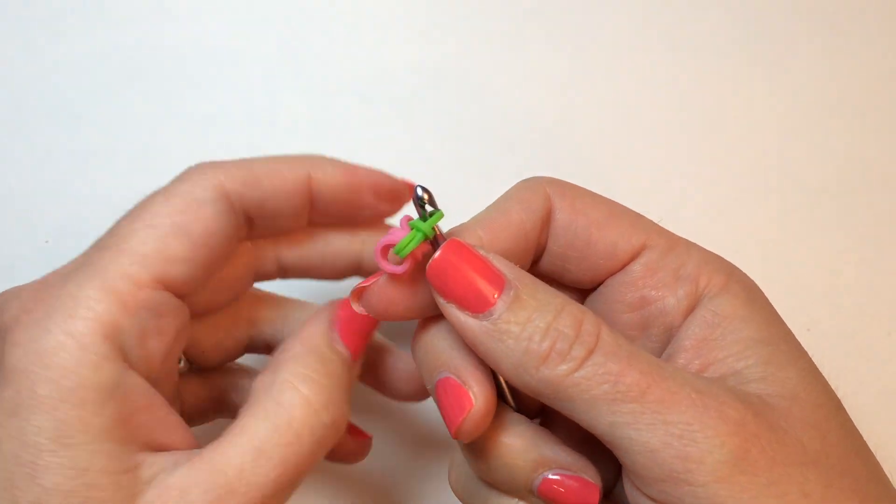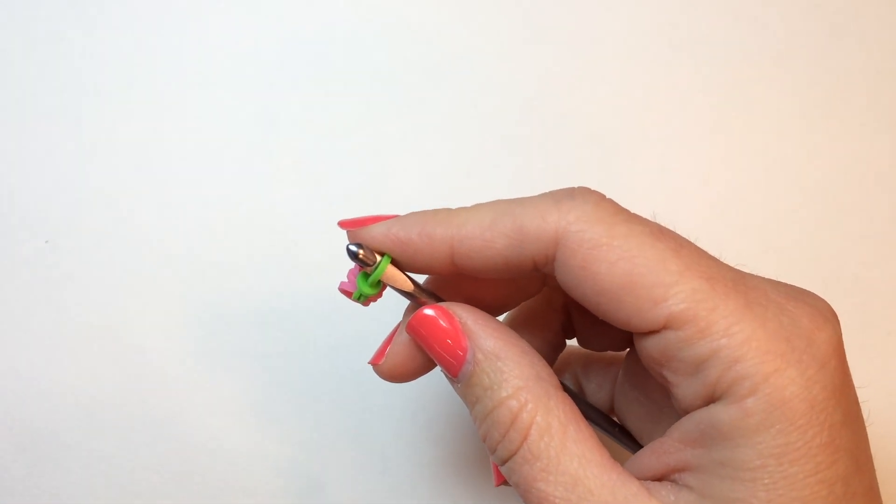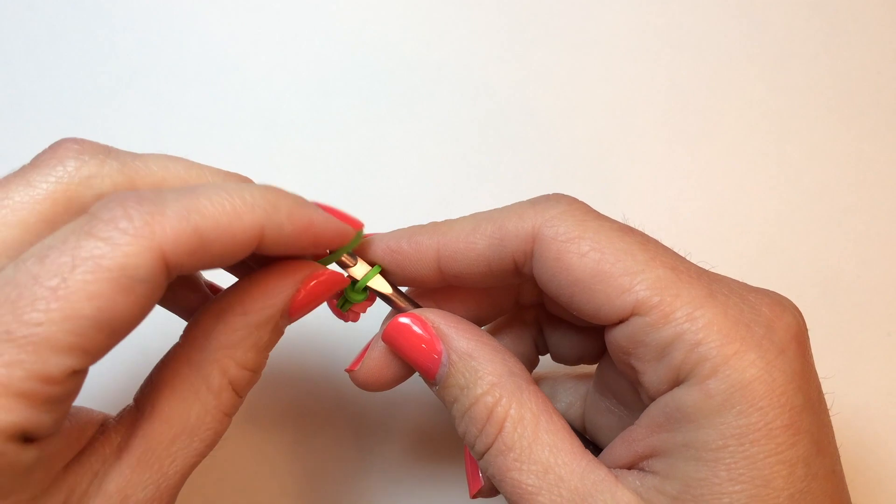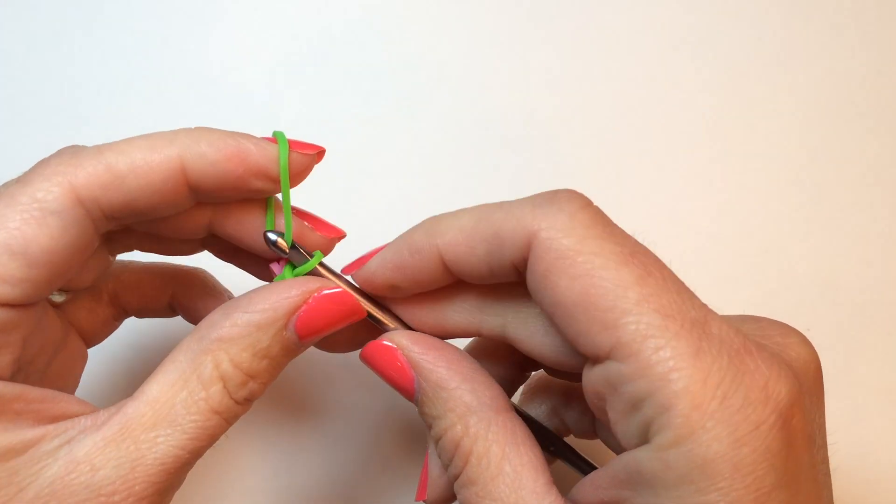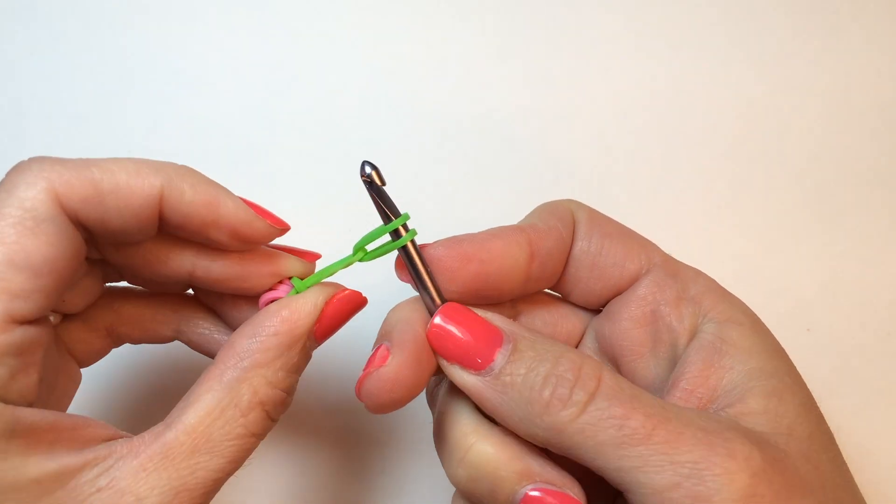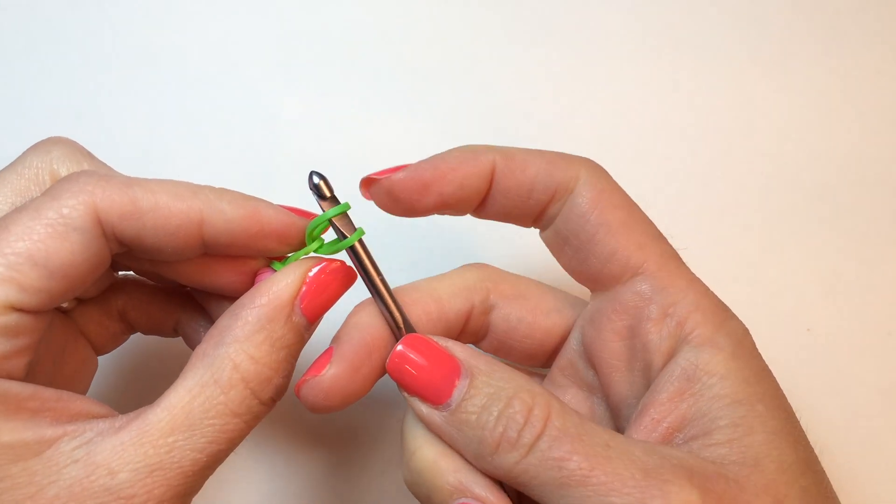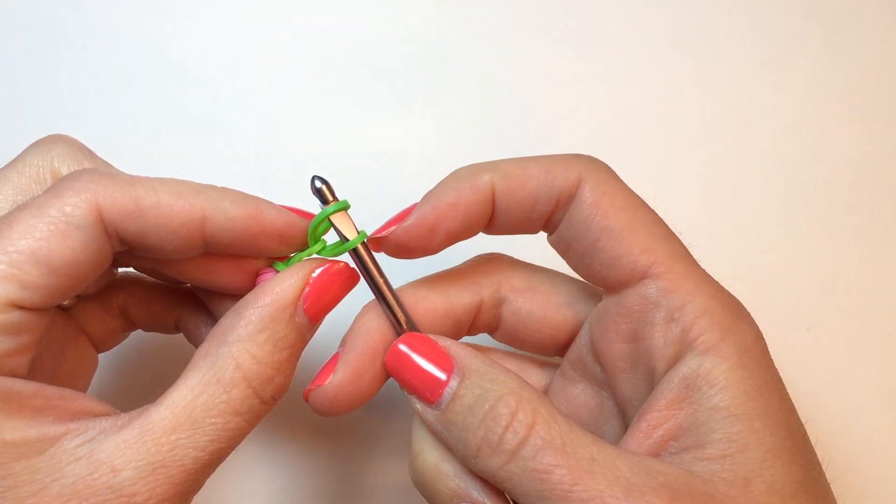And that's how you make the basic flower for the center. And we're just going to extend this so that it will fit comfortably as a ring by adding two more green bands on, and we're going to slip knot them. So, take this side of the rubber band through this side.